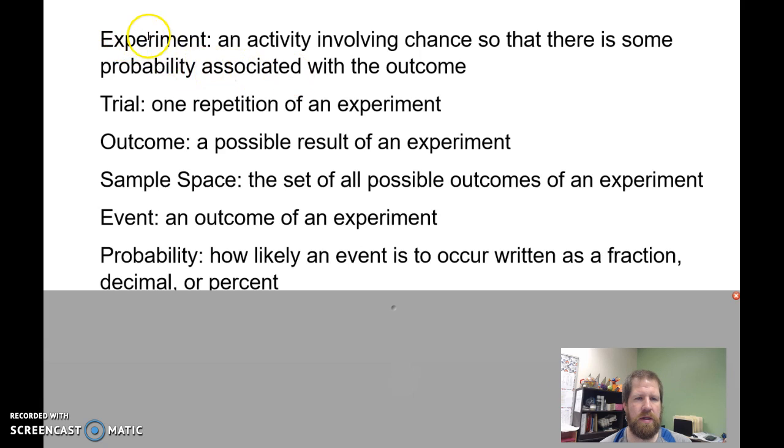So an experiment, this isn't necessarily the same as a science experiment, this is just any activity that has some probability associated with the outcome. So there's some aspect of chance. A trial is one repetition of the experiment. So if my experiment is testing out a die, a trial is rolling that die one time.